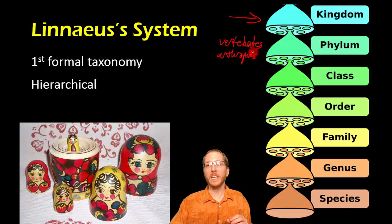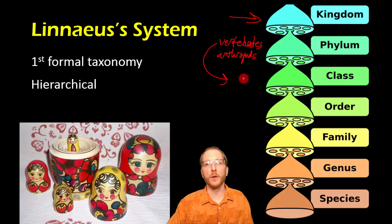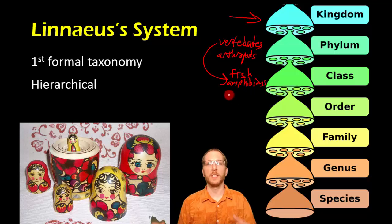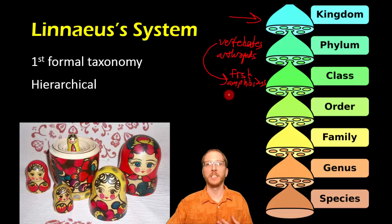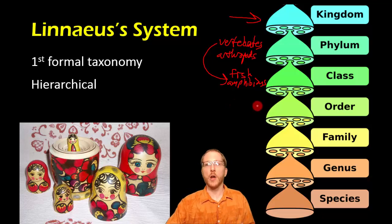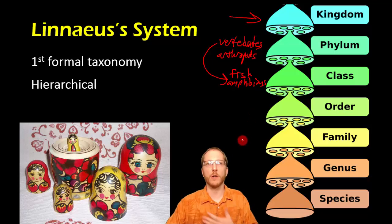Within a group like the vertebrates, we can keep going down. So if we take the vertebrates and go to the class level, we can divide those up even further — into groups like fish or amphibians. Then we can take one of those groups, like fish, and divide them into smaller orders. So you could have cartilaginous fish like sharks, and bony fish like goldfish or tuna. From there we can break those up further — at the family level you've got different types of sharks, different types of rays and skates. And then you can go to the genus level, and finally the species level.